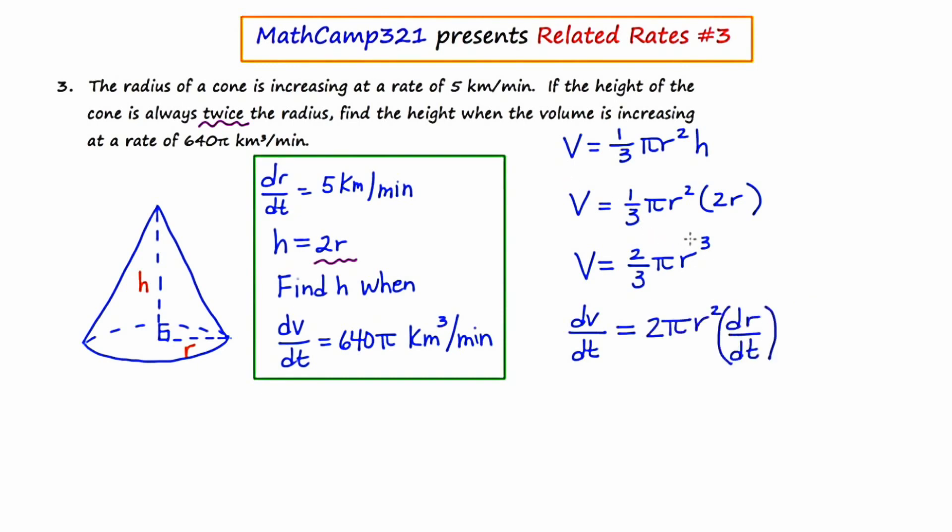The derivative of two-thirds π R cubed is going to be 2π R squared dr/dt. Keep in mind that this three here is going to leap down in front and be written here. And the three and the three are going to cancel out. And that's why we're just left with this two.